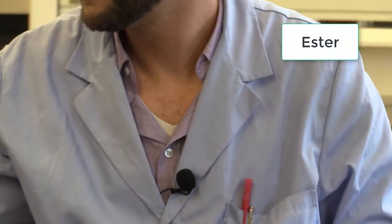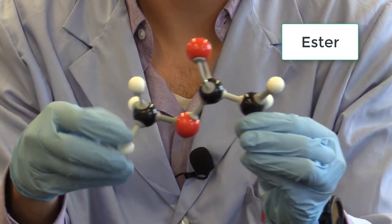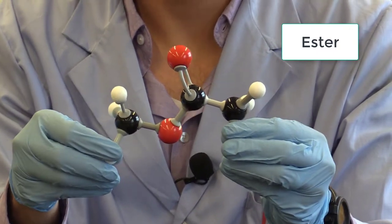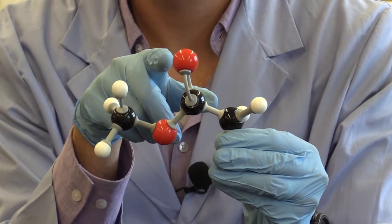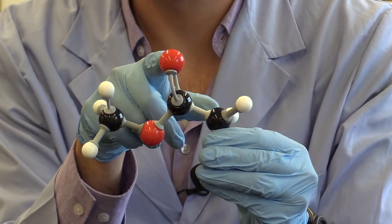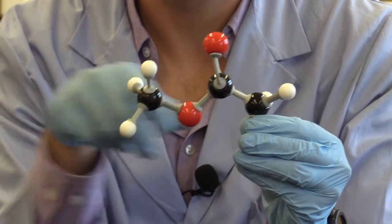This guy here is an ester. You have a carbon double bonded to an oxygen, and then the carbon is also bonded to an oxygen and then this oxygen is bonded to another carbon.